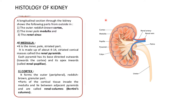Let's see the longitudinal section of the kidney. There is an outer part known as the cortex, inner to which is the medulla, and inner to that is the renal sinus. The medulla contains thin pale striated parts called renal pyramids. Each pyramid has its base directed towards the cortex and its apex directed towards the renal papillae. The cortex is the outer reddish-brown peripheral part; cortical tissue that invades the medulla between adjacent pyramids is called renal columns, also known as Bertini's columns.